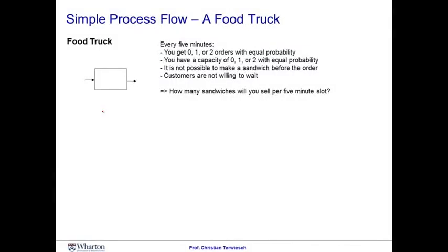In our calculations for the Subway case, we assumed that workers would work like robots — it would take, for example, exactly nine seconds per customer to put the cheese on the sandwich. We will stick with this assumption for a little longer, but I want you to understand the implications of assuming that these processing times have absolutely no variability associated with them.